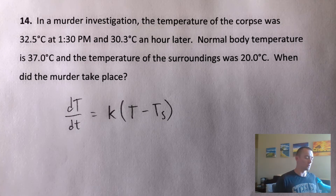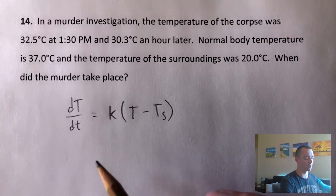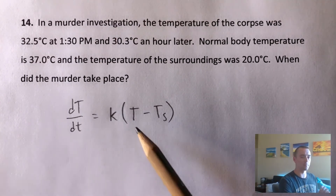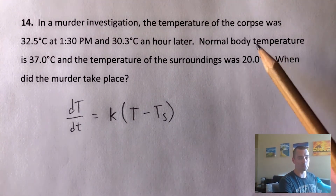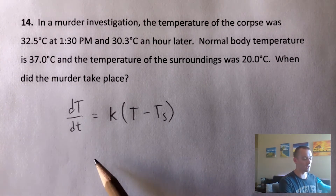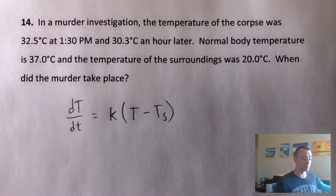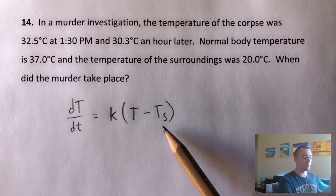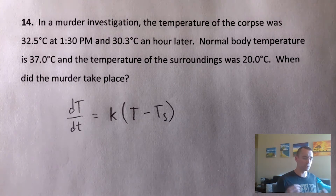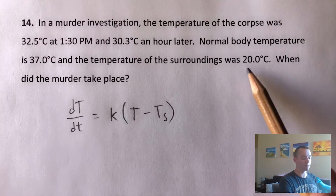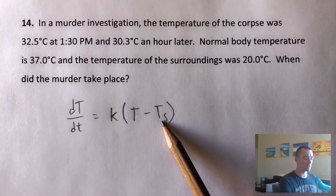Typically the first place you want to start with these is to break down this formula. Capital T represents the temperature of whatever object you're looking at — in this case, the corpse. Little t is the time that has passed, presumably how long it's been since the murder occurred. K is some unknown constant we're going to have to figure out. And T_S is the temperature of the surroundings, which we know was 20 degrees. So we can plug in 20 for T_S right off the bat.